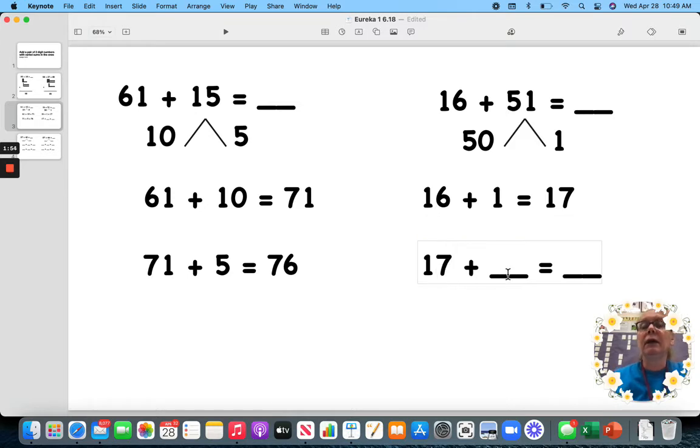17 plus 50 is, add your tens, 1 and 5 is 6. 67. So, this is 67. And this one is 76.